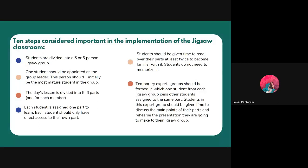Today's lesson is divided into five to six parts. It's important to divide the content into the same number of parts as the number of students in each group. So if you have six members in a group, break your content into six parts. Each student is assigned one part to learn and should only have direct access to their own part. Each group member is responsible for one part of the content.